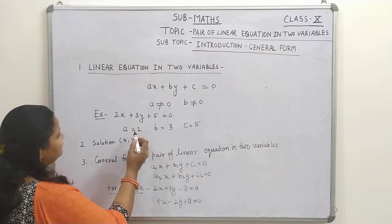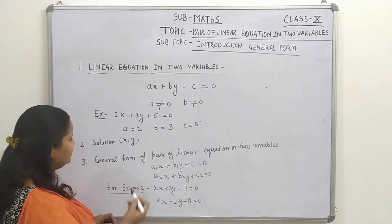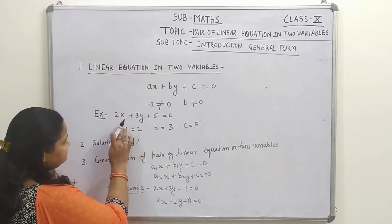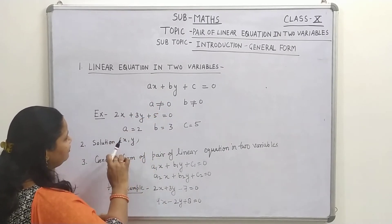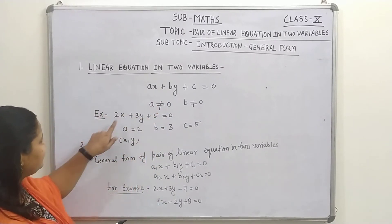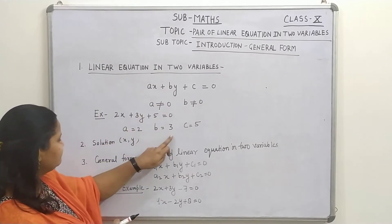For example, here is an equation 2X plus 3Y plus 5 equals to 0. So, you can see, if we compare these both equations, if we compare this equation by the general form, we get the value of A equals to 2 here and value of B equals to 3 here.